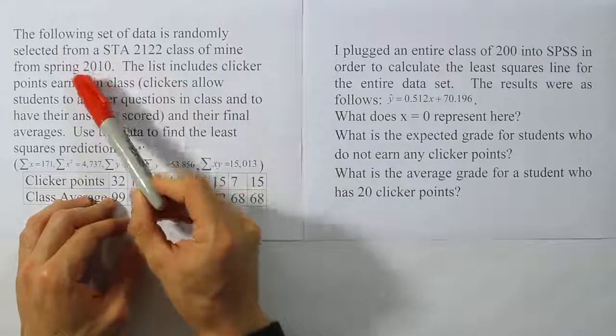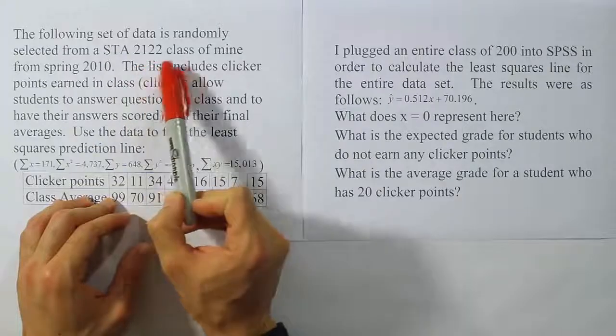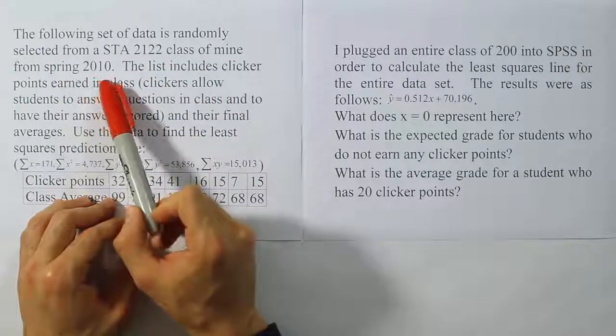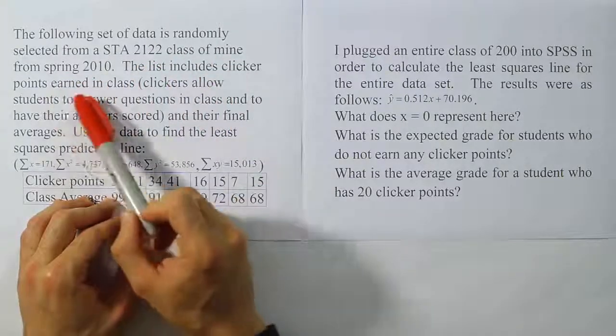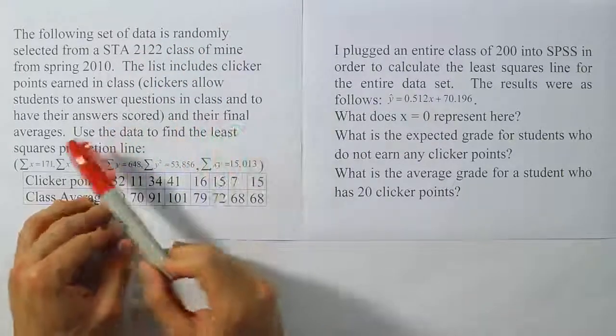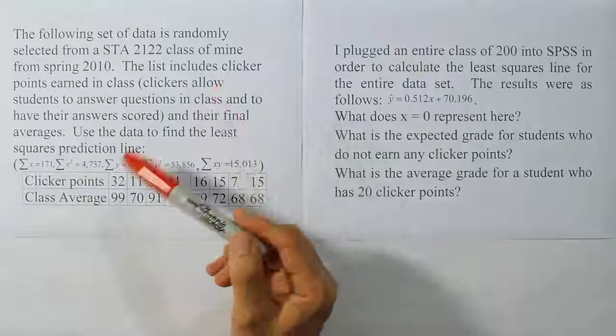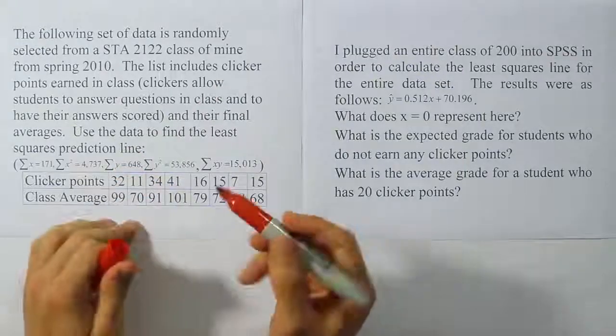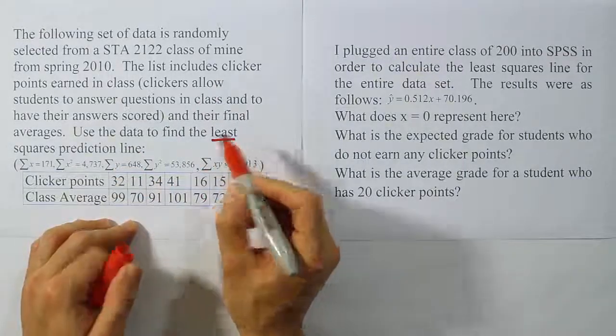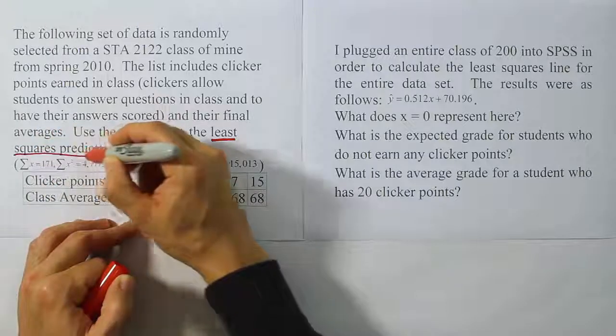The following set of data is randomly selected from an STA 2122 class of mine from Spring 2010. The list includes clicker points earned in class and their final averages. Use the data to find the least squares prediction line. The problem tells us clearly what to do.